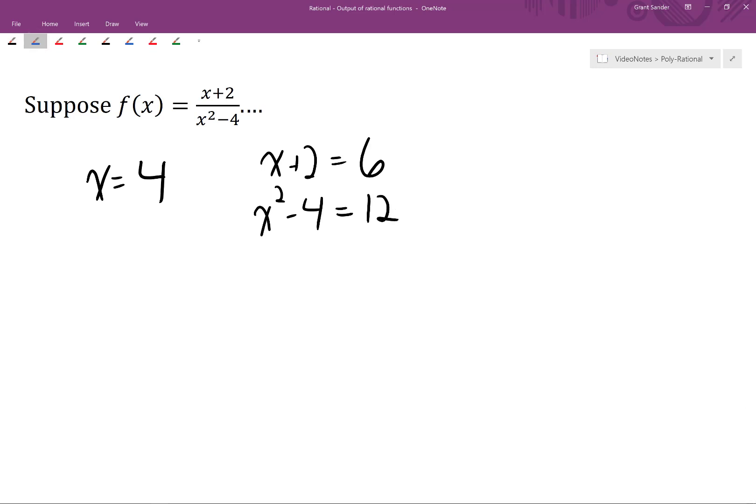So if we look at this ratio, x plus 2 divided by x squared minus 4, that's equal to 6 divided by 12, which equals 0.5. And therefore, when x equals 4, the numerator is 0.5 times as large as the denominator.